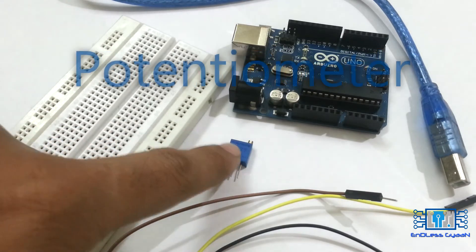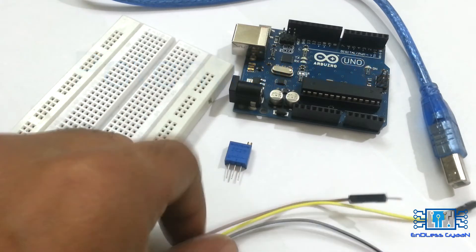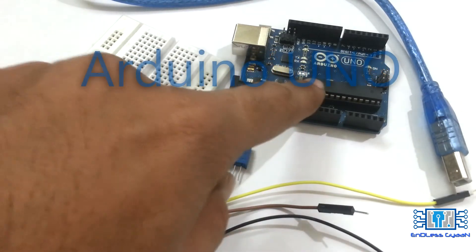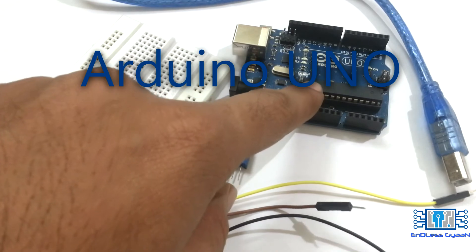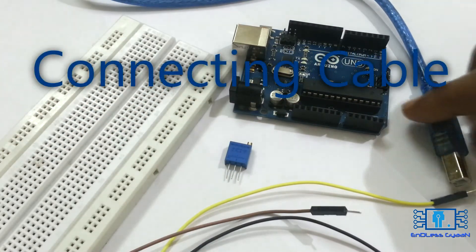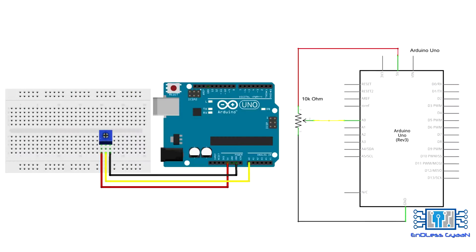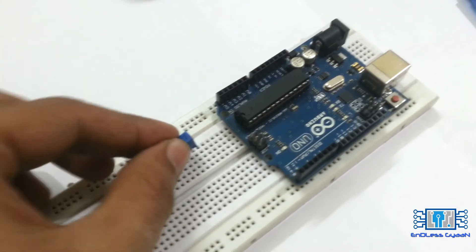The hardware required is: a breadboard, a 10k trimmer, jumper wires, an Arduino Uno, and a connecting cable to connect the Arduino to the PC. For the circuit, connect the 5V pin of the Arduino to the first pin of the trimmer, the lower pin of the trimmer to the ground of the Arduino, and the middle pin of the trimmer to the analog input pin A0 of the Arduino. Now assemble the circuit.